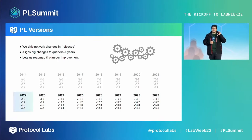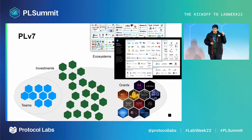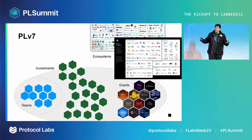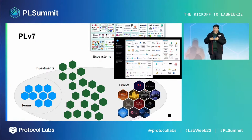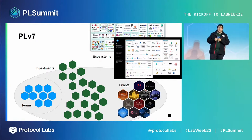I want to tell you about some of the large changes that brought us into this year. In PLV7, the landscape of PL looked like this. We had a set of teams that interacted and worked with a lot of groups. We had a number of investments across many different groups, and we also offered lots of grants to many groups across the broader ecosystem and across many companies.